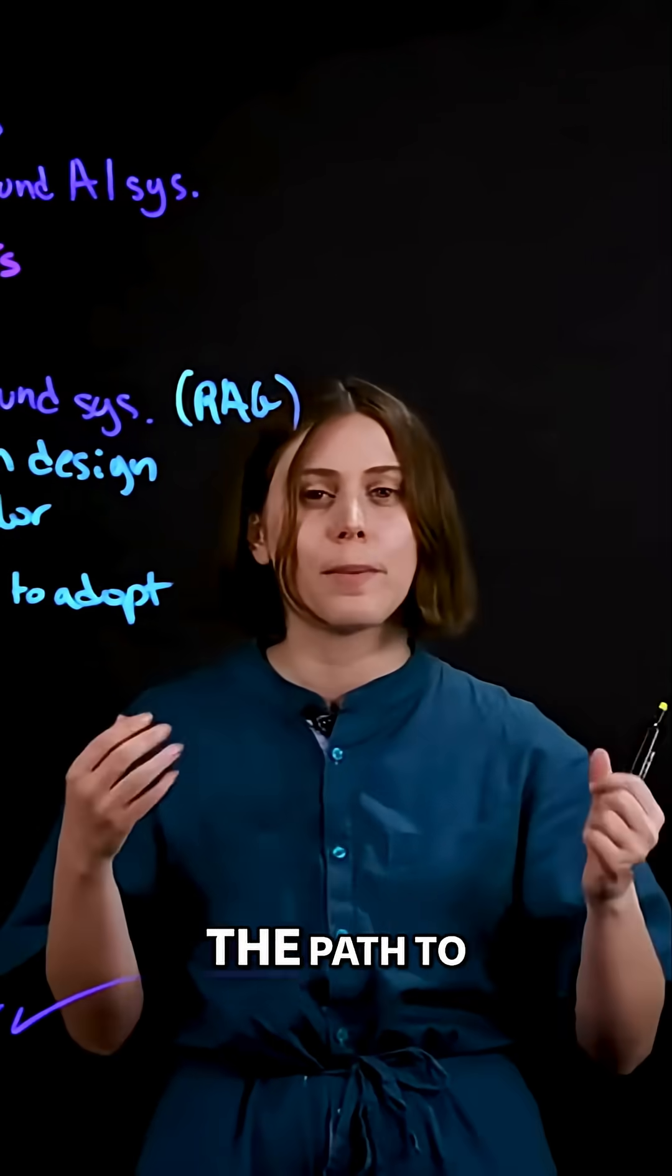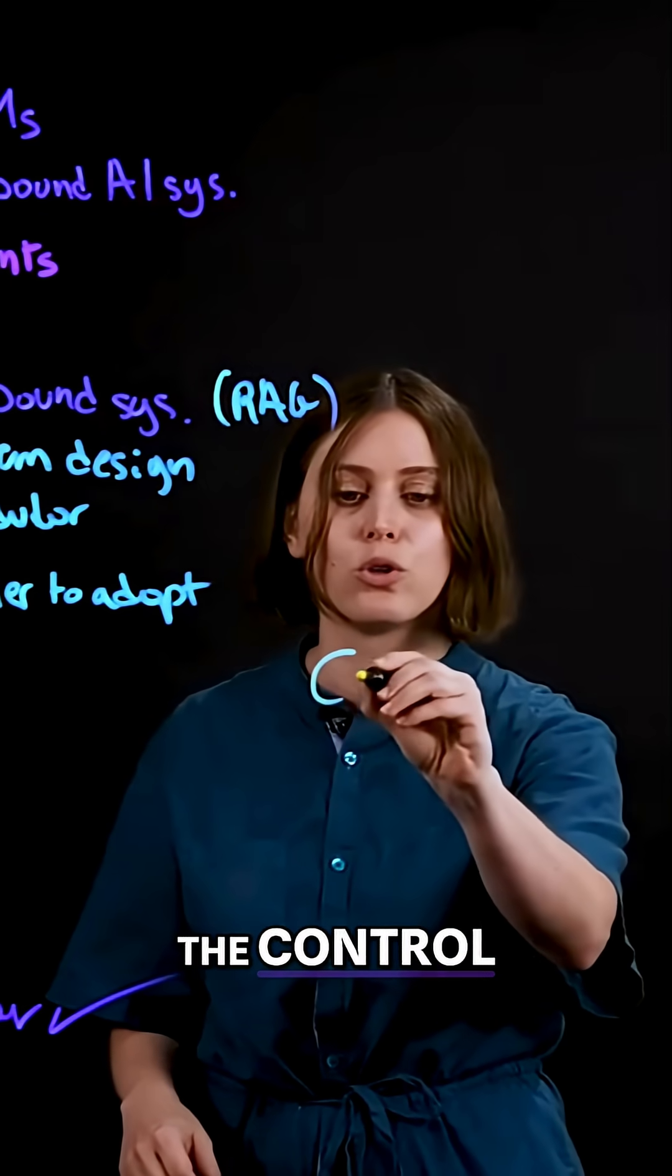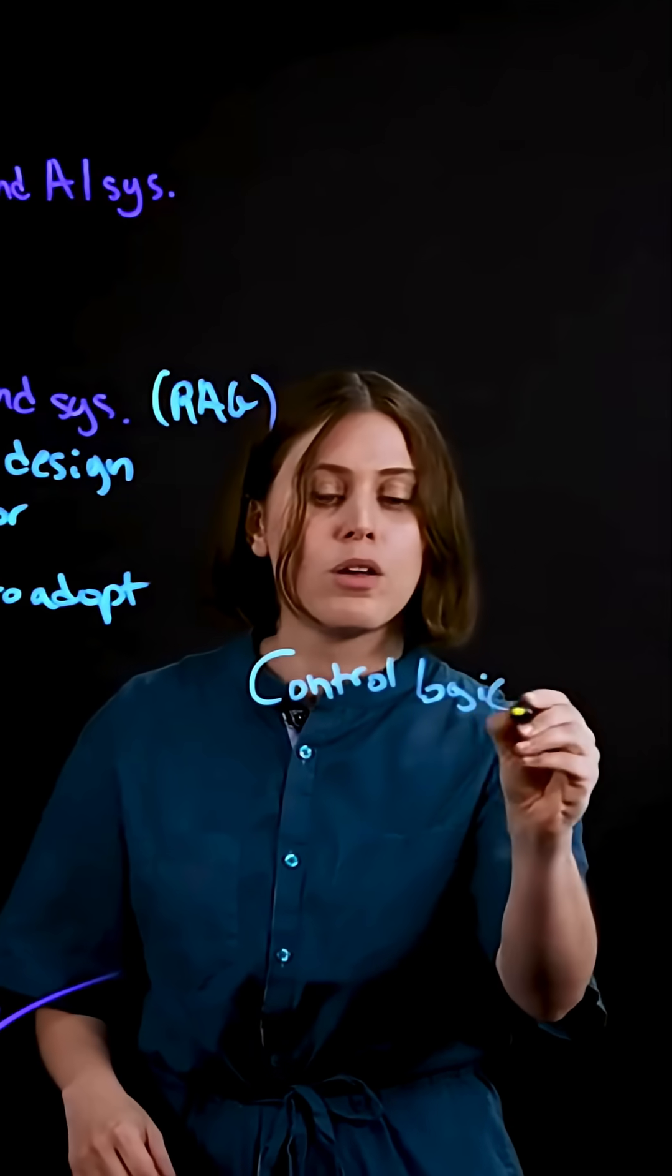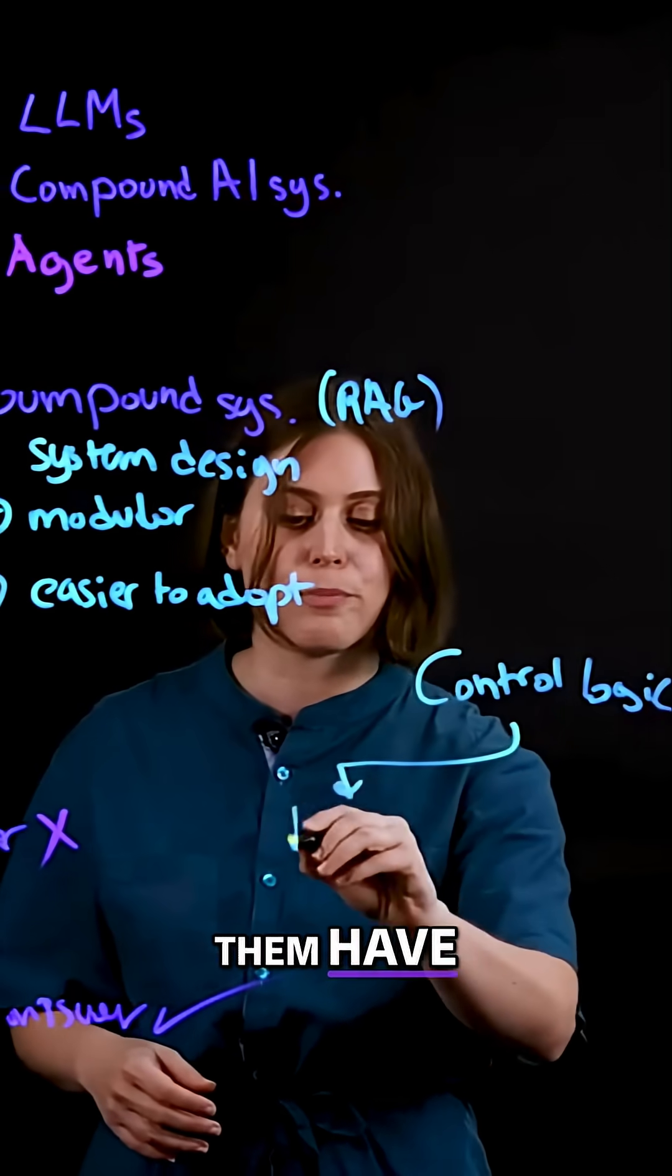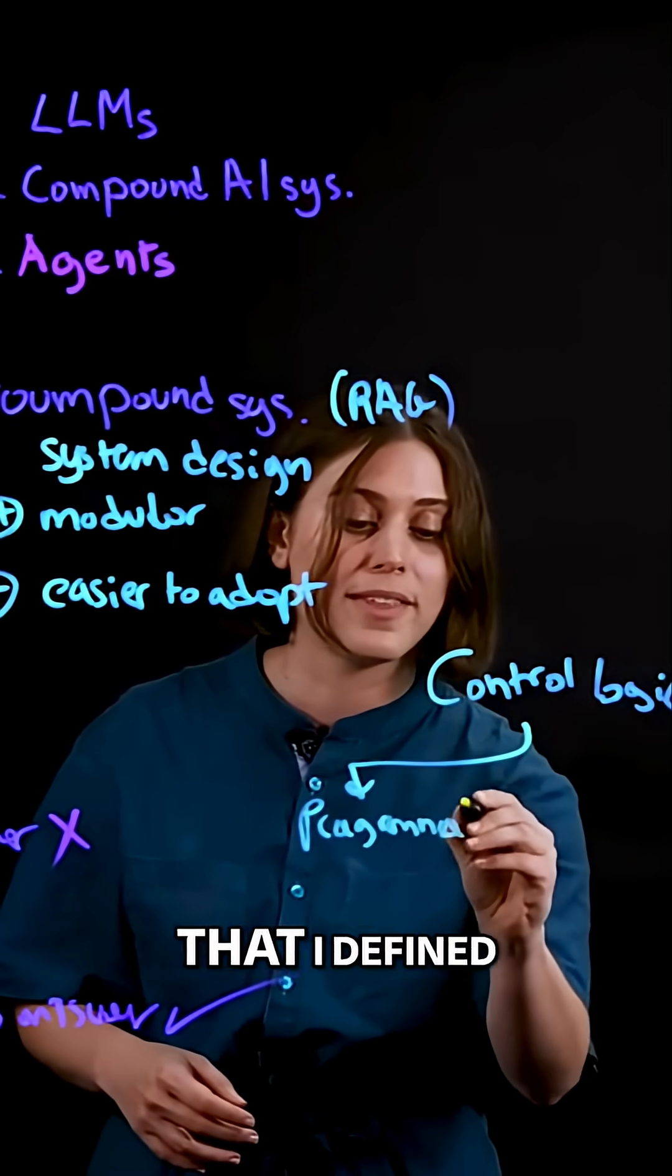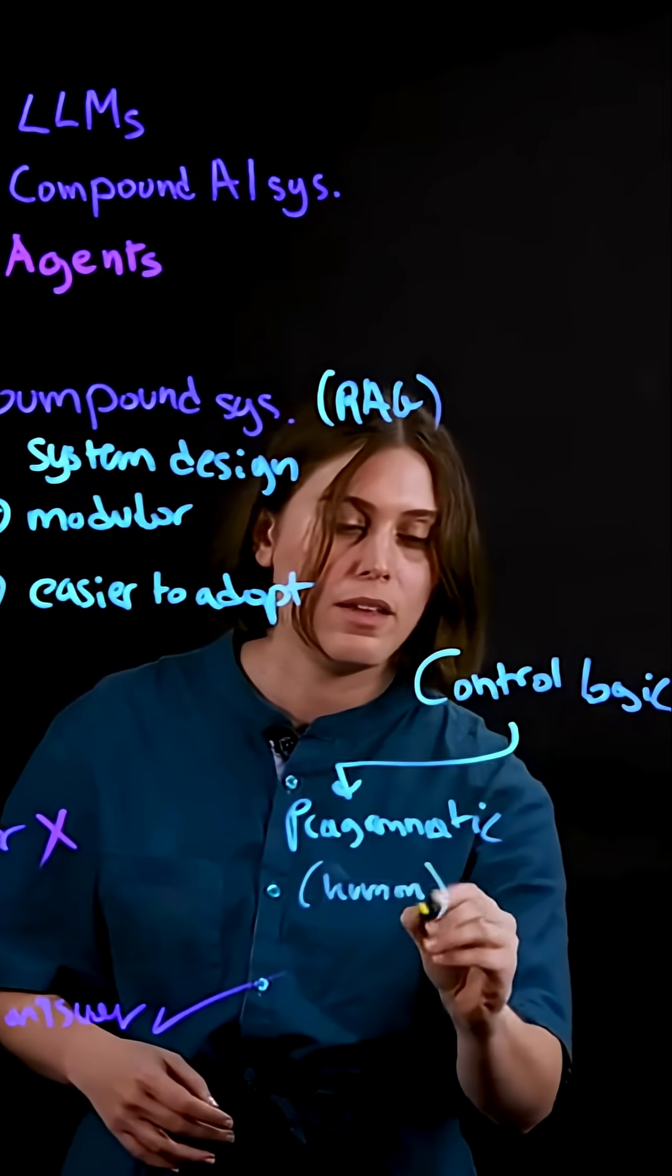So when we say the path to answer a query, we are talking about something called the control logic of a program. So compound AI systems, we said most of them have programmatic control logic, so that was something that I defined myself as the human.